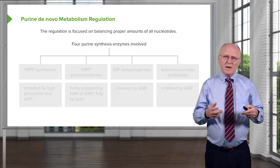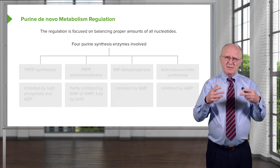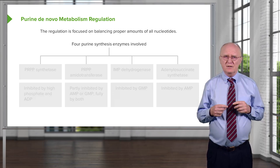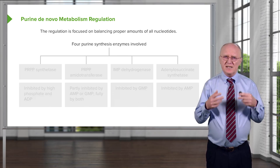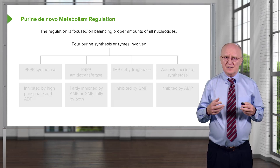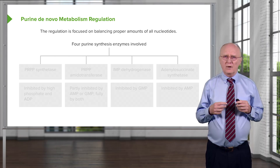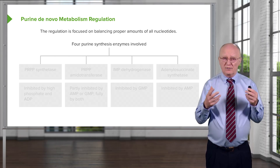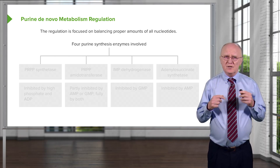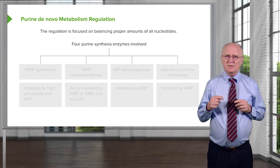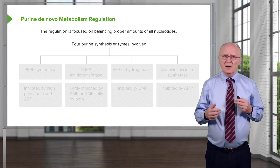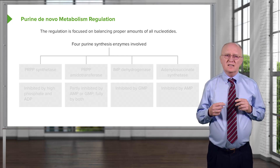As I've described this, I've mentioned four different enzymes involved in catalyzing intermediates in purine synthesis and how they were important from a regulatory perspective. So let's look at those individually and the things that affect their activity.